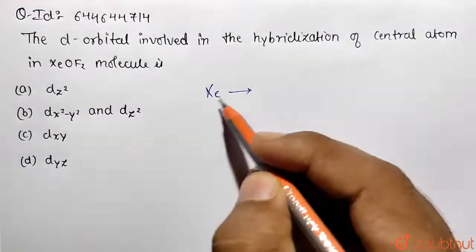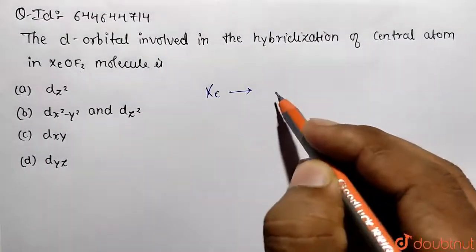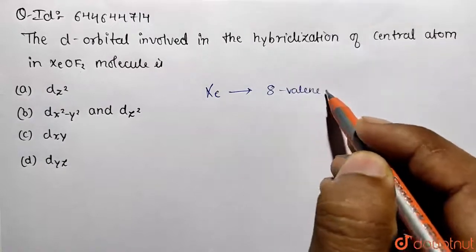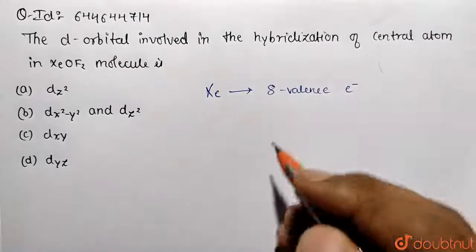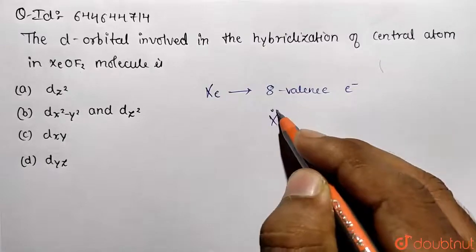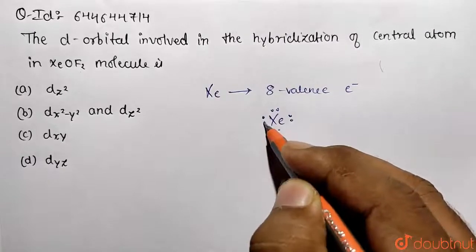Xenon belongs to the noble gases and is having how many valence electrons? Eight valence electrons are there in the xenon molecule, which can be represented like this: four pairs of lone pairs.